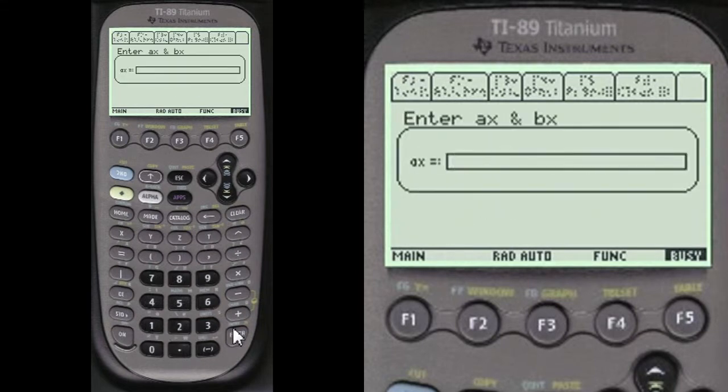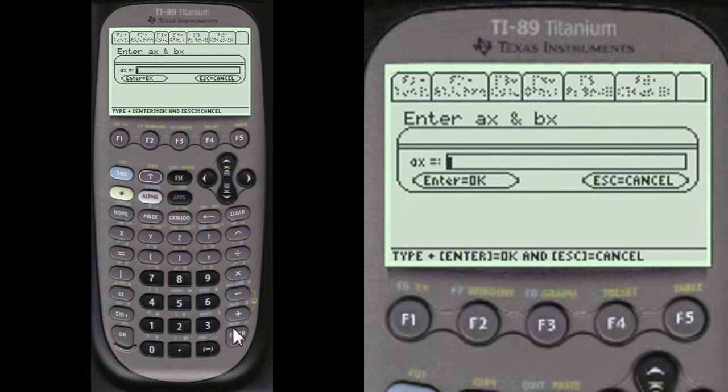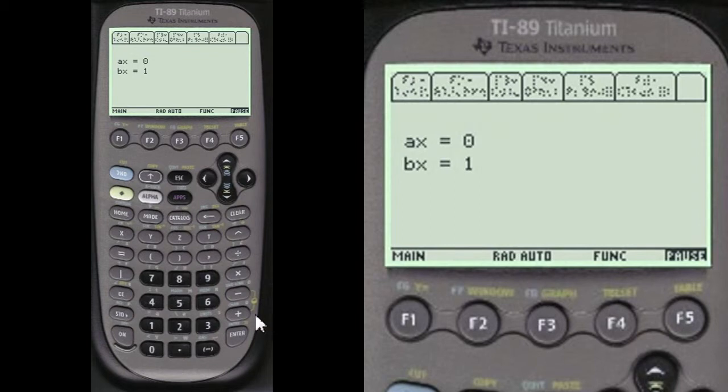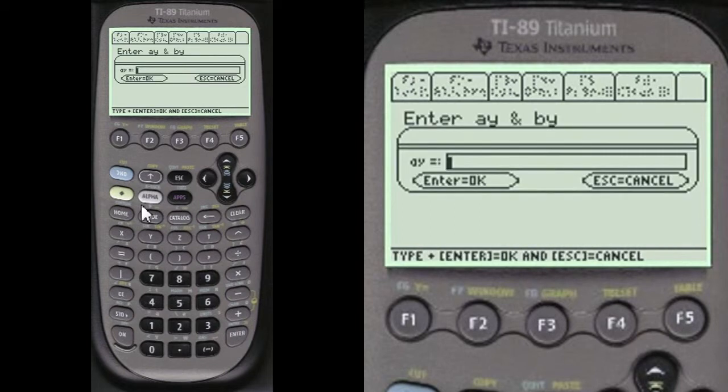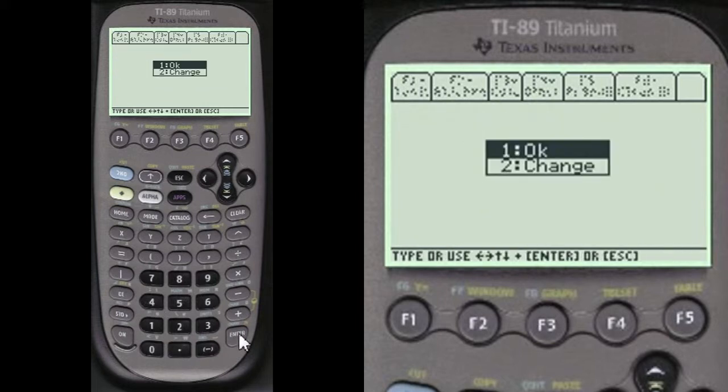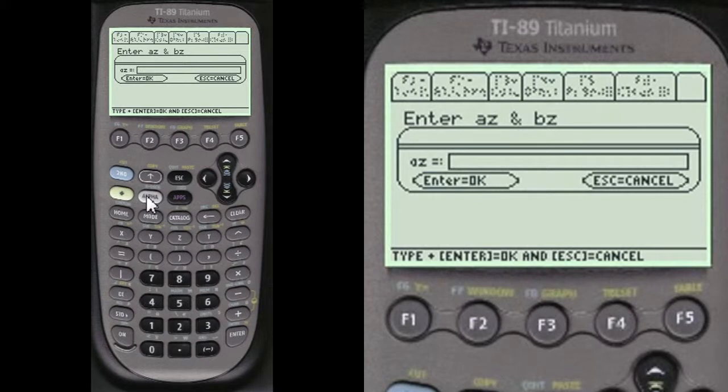There's the region. So our limits of integration alpha 0 alpha 1. Okay, alpha minus 2 alpha 4. Okay, alpha 2 alpha 4.